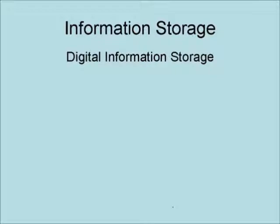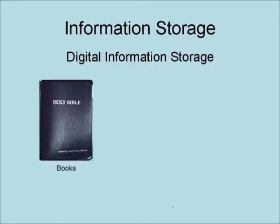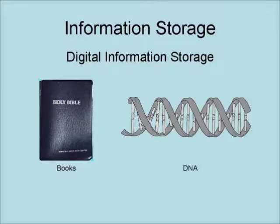The following are examples of even older digital information storage systems. Books, like the King James Bible, contain information digitally encoded in the form of letters and words. DNA is the digital information storage system of living cells. DNA contains information digitally encoded in four bases, commonly denoted by A for adenine, T for thymine, C for cytosine, and G for guanine. Together they form the densest encoding system of information known.